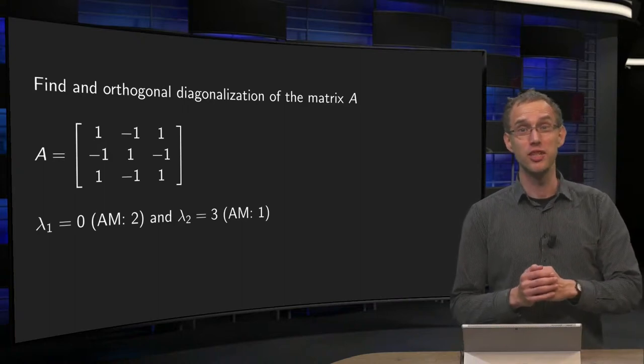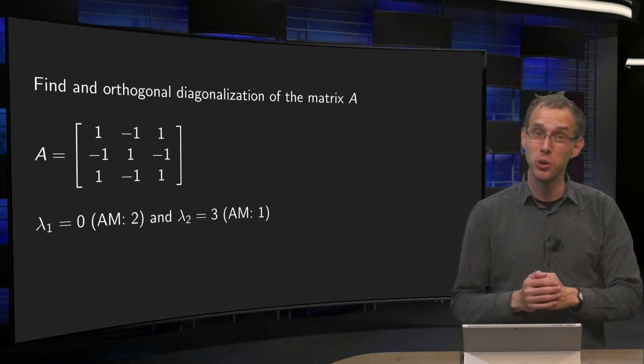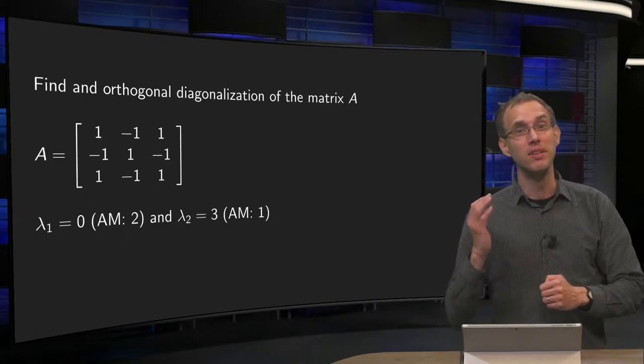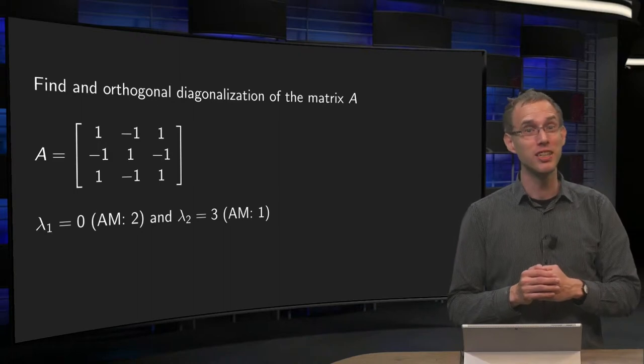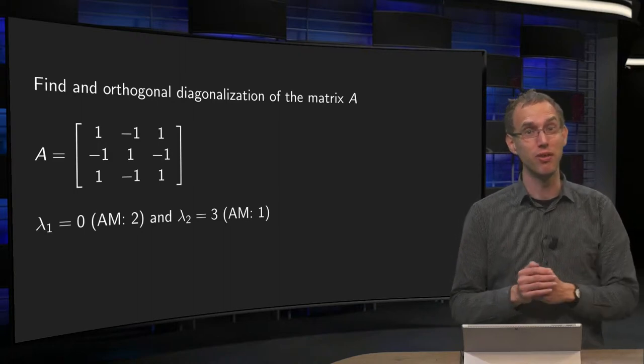The spectral theorem tells us that a symmetric matrix has an orthogonal diagonalization. But how can we find it explicitly? Even with a small matrix, this can be quite tricky, as you will see in the following example.